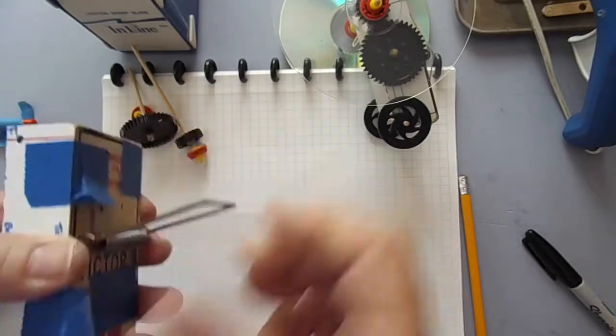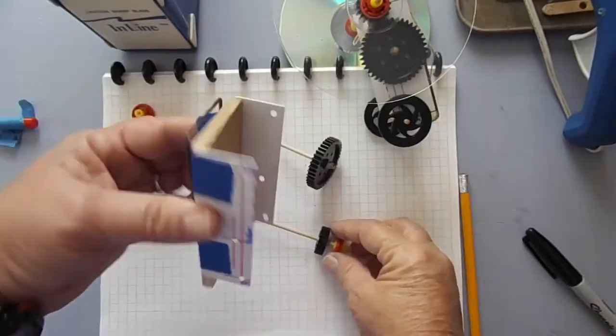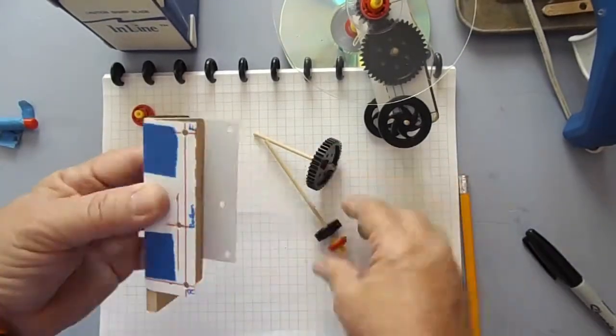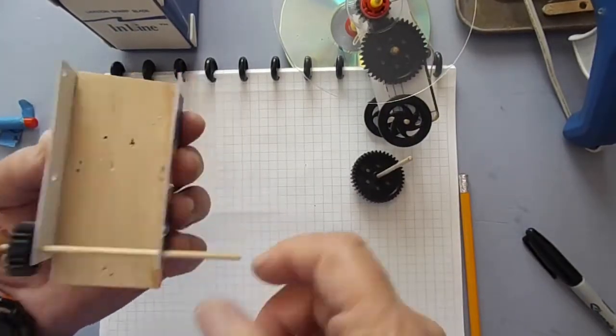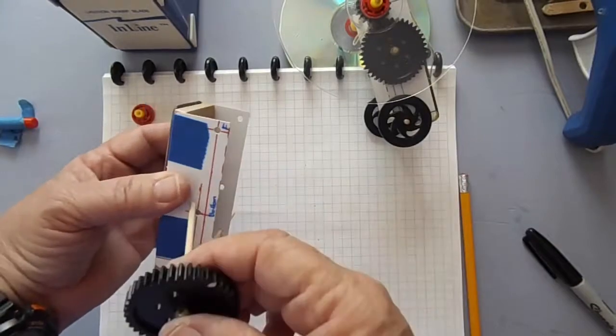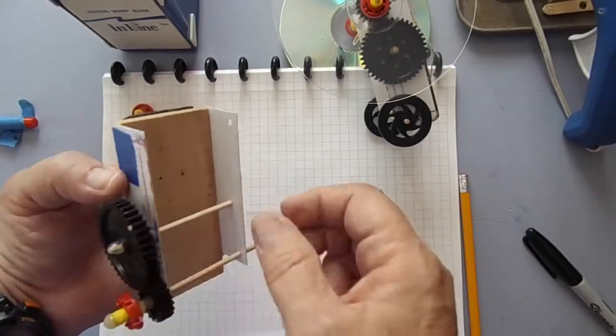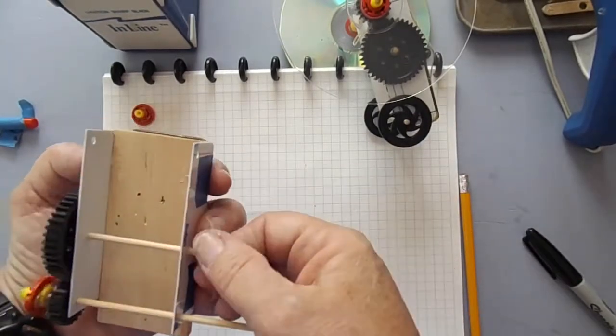Place the axles with the gears on them through the proper holes in the gearbox to help with alignment. The axles need to be parallel to each other and perpendicular to the long edges of the mousetrap. Gears and axles should turn freely in either direction.